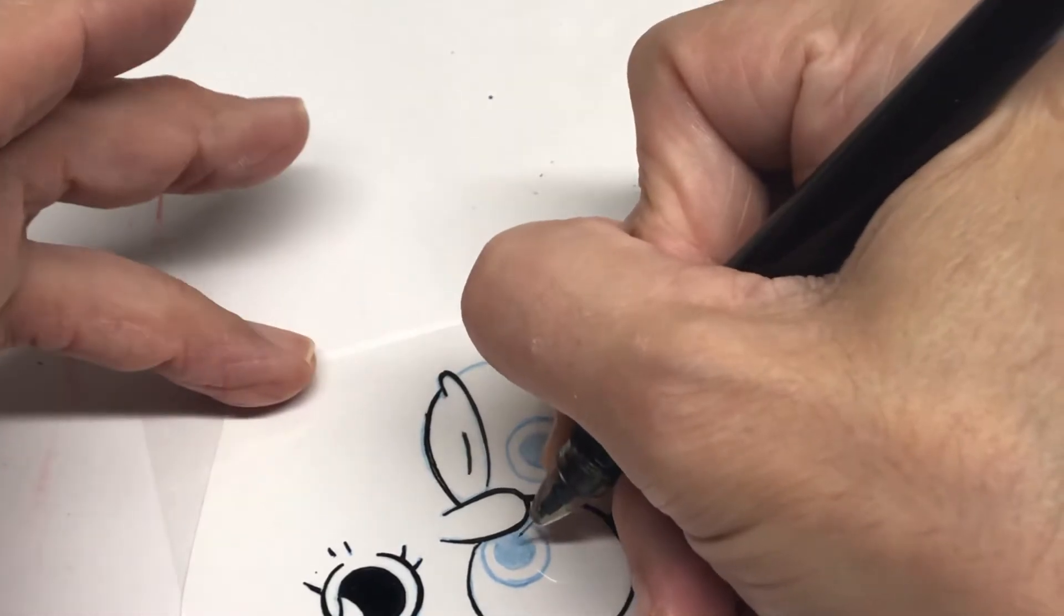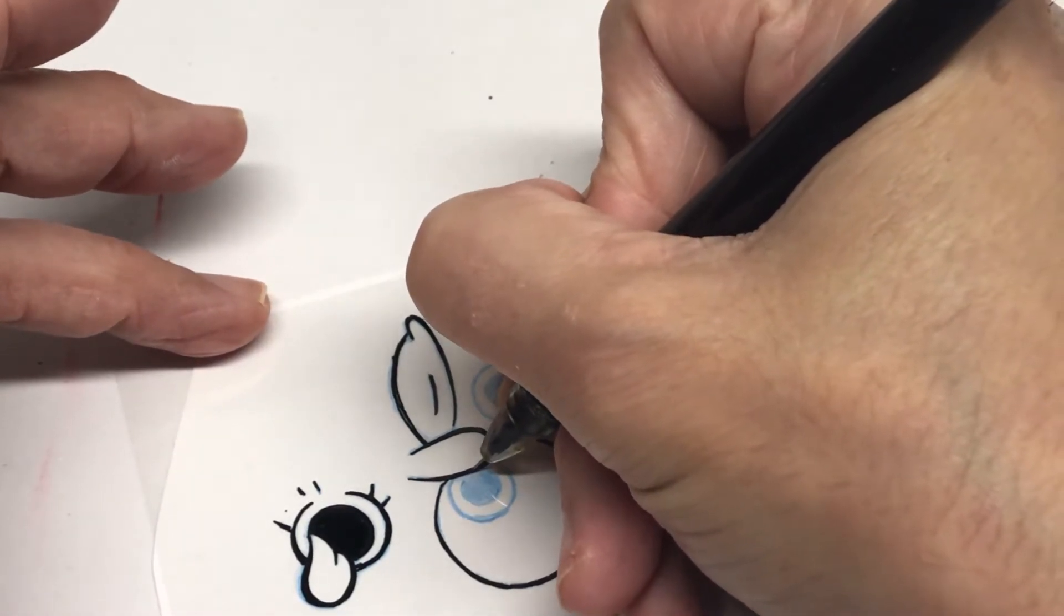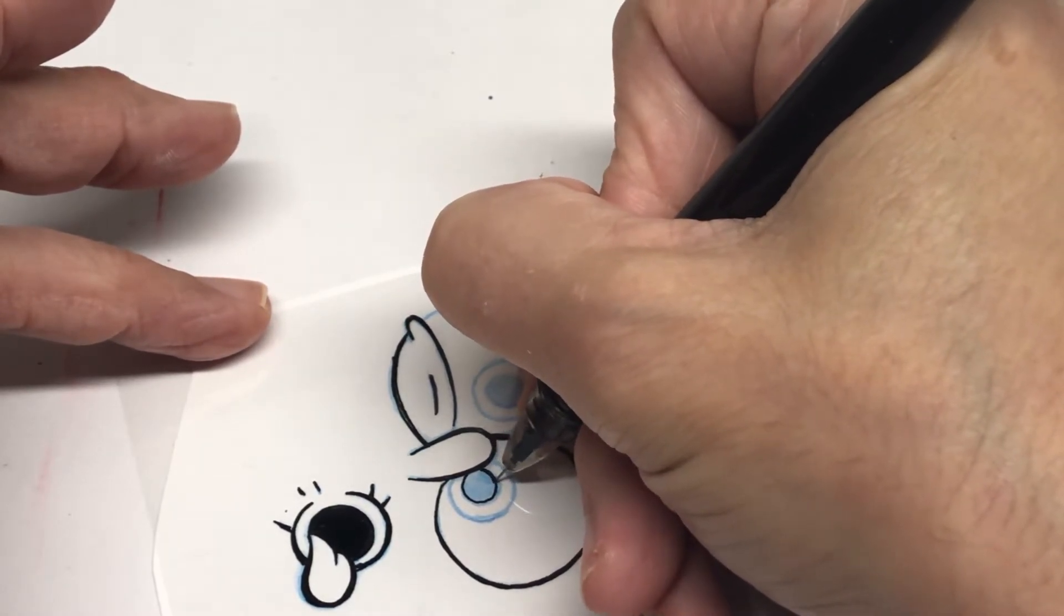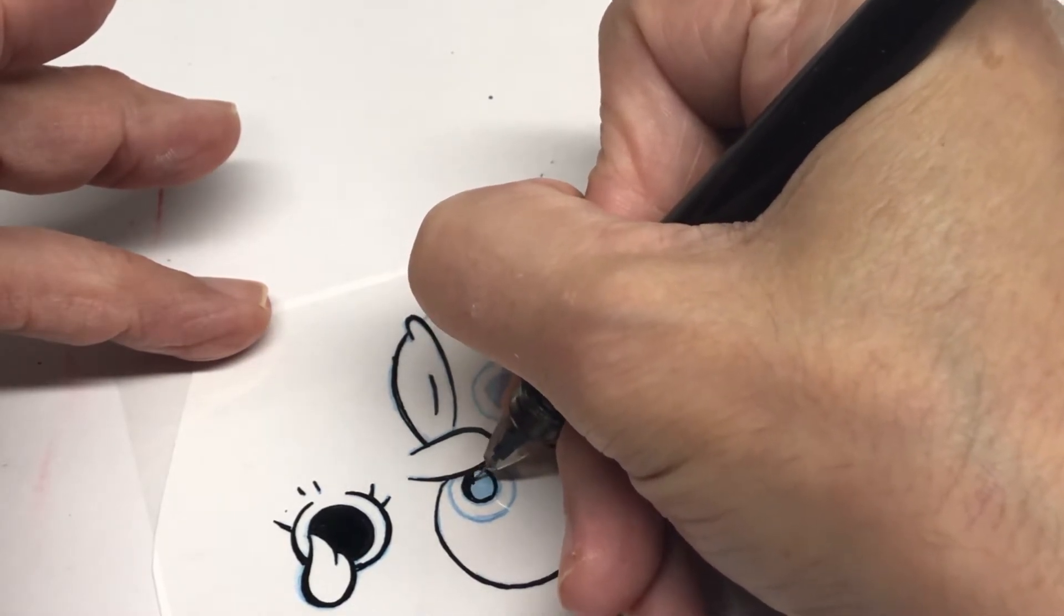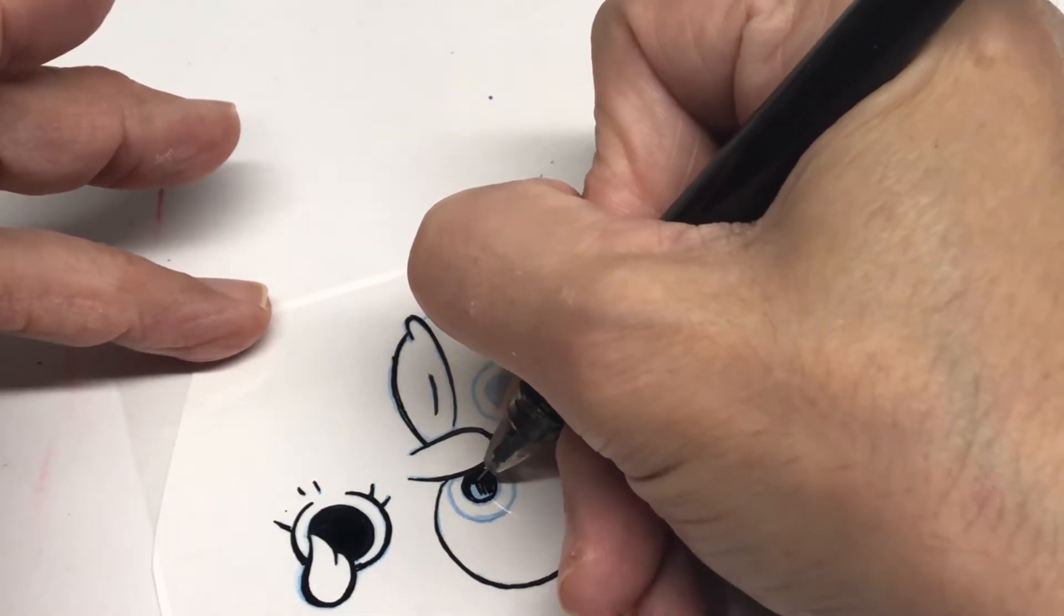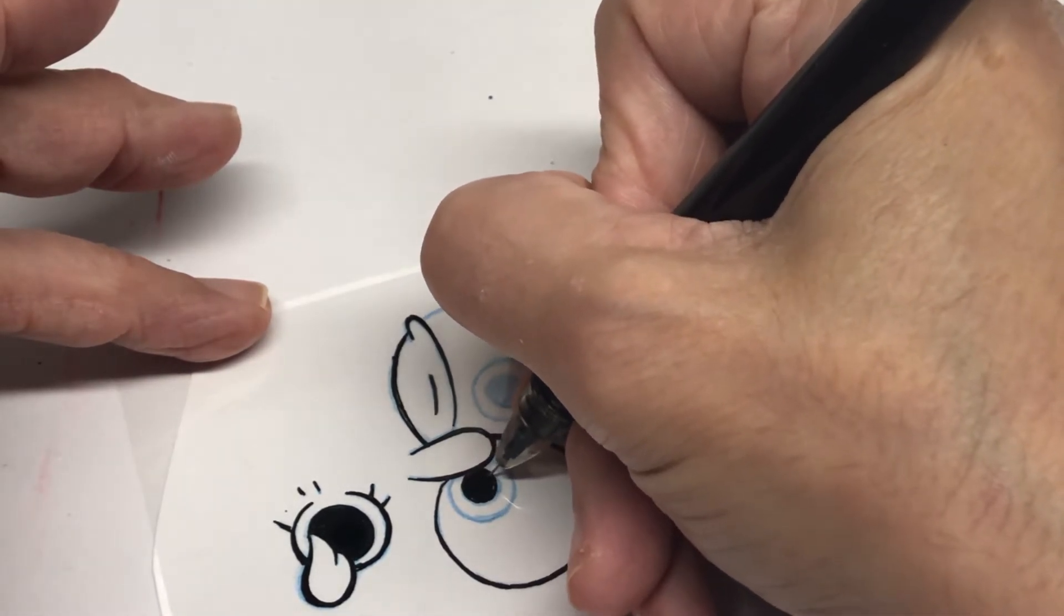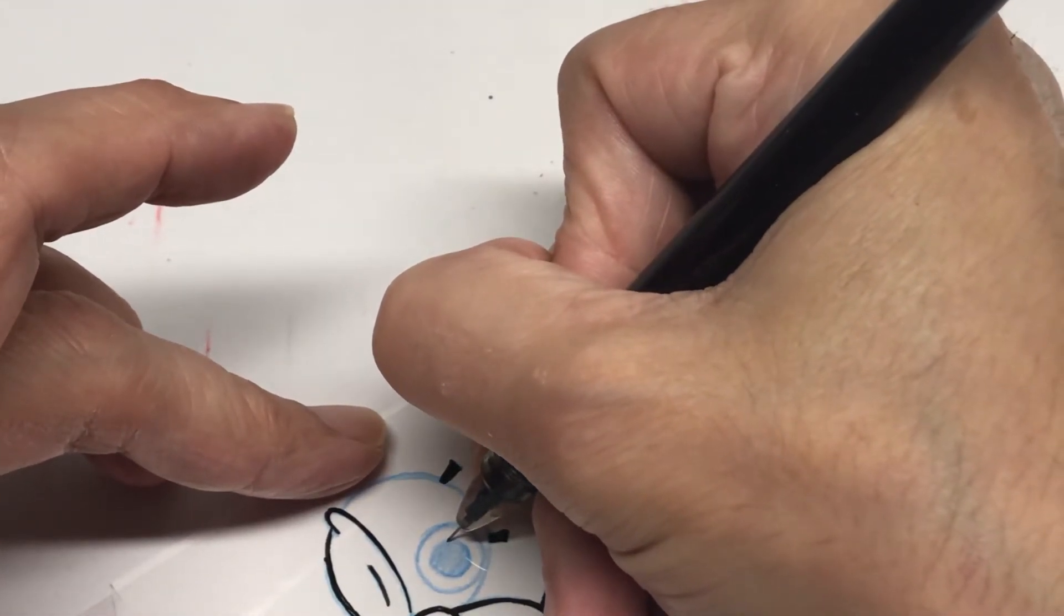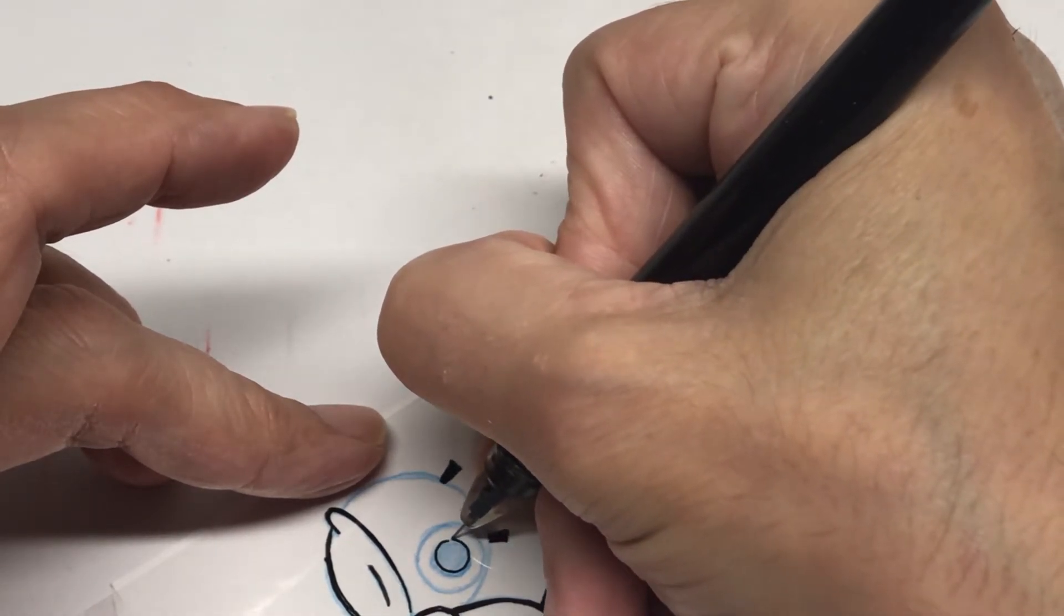And this ink dries really fast. It's actually meant for drafting. But, I've found that this is the only ink that will really stay on the cell. I've used other ones that say waterproof. But, they're not really on the cell. So, you've got to be careful with which one you get. Because, either it will wipe off the acetate.